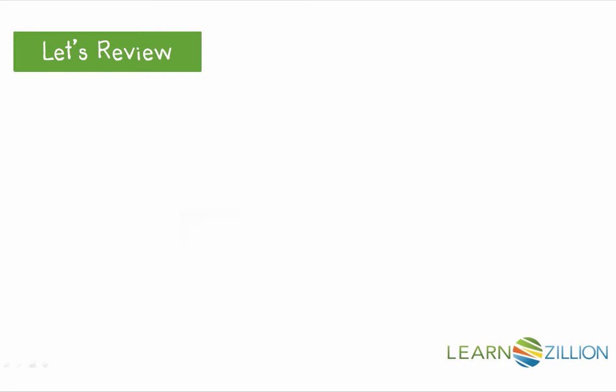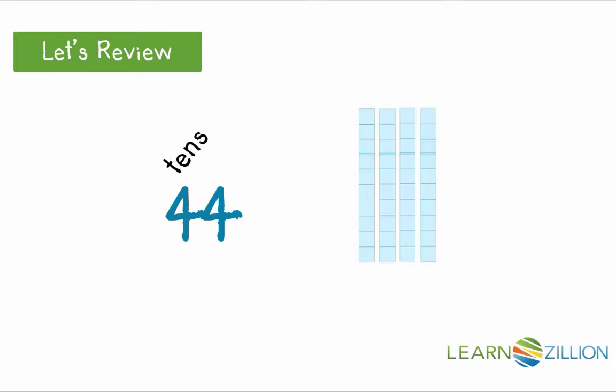You have already worked with two-digit numbers like 44. Remember, each digit has a different place value. The digit 4 on the left is in the tens place. This tells us there are four groups of 10. The last digit 4 is on the right in the ones place. This tells us that there are four ones. There are four groups of 10 and four ones in the number 44.